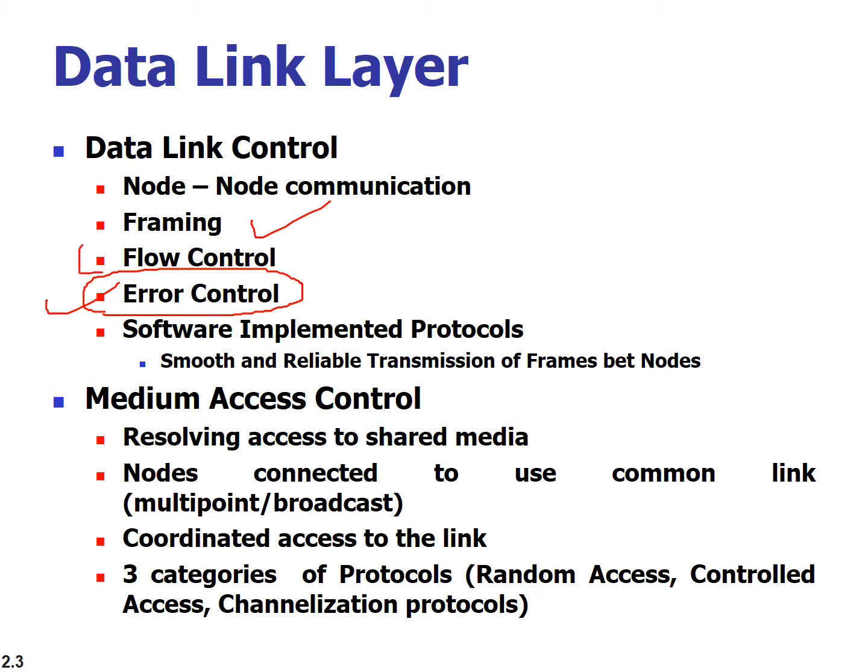Error control is one primary functionality of the Data Link Control sub-layer. Flow control is another important functionality. Flow control deals with the rate at which data is sent — the sender must control this rate so the receiver can absorb it. If not controlled, it could overwhelm the receiver's buffer, so the sender must regulate the flow of data.